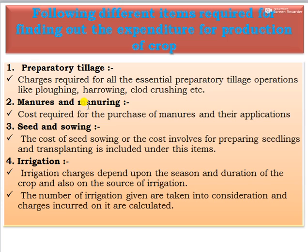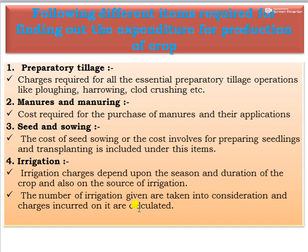Second is manures and manuring — the cost required for the purchase of manures and their application. Third is seed and sowing — the cost of seed, sowing, or preparation of seedlings and transplanting. Fourth is irrigation: irrigation charges depend on the season, duration of the crop, and the source of irrigation. The number of irrigations given are taken into consideration and the charges incurred are calculated.